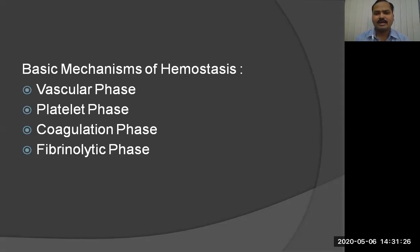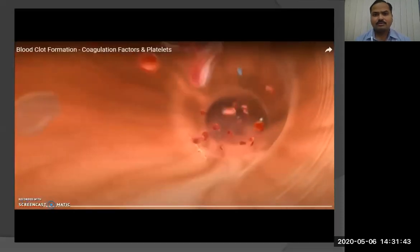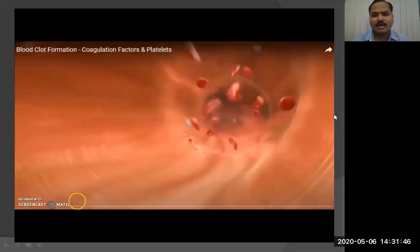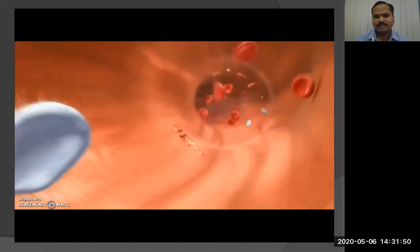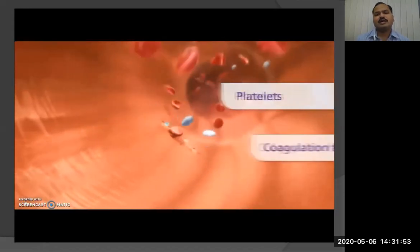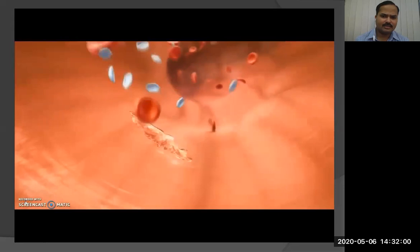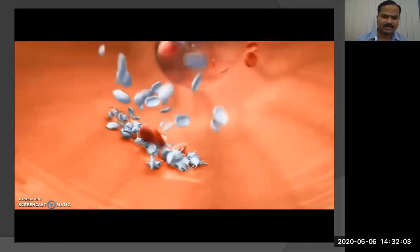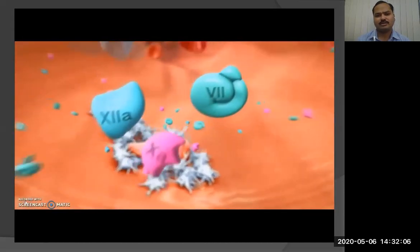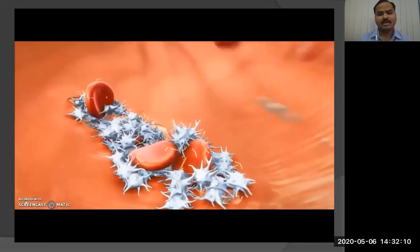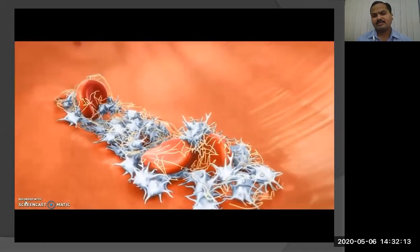Before we go to the oral manifestations directly, we can talk about the basics of hemostasis. Hemostasis can be achieved through the vascular phase, platelet phase, and coagulation phase. There is a video showing blood flowing in a blood vessel where, upon injury, platelets and various coagulation factors work in a coordinated manner, moving to the site of injury, aggregating there, and forming fibrin strands which stabilize the clot.